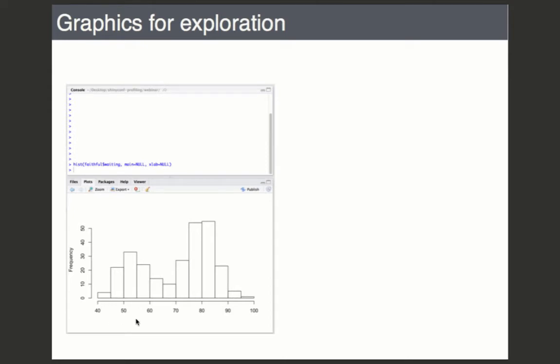So here's an example. I'm looking at this histogram of a built-in data set in R about geyser eruptions, Old Faithful. So I run histogram here, it looks like this, and I decide, what if I want to look at the histogram in a little bit more detail with smaller bin size? Well I can just tweak a parameter.